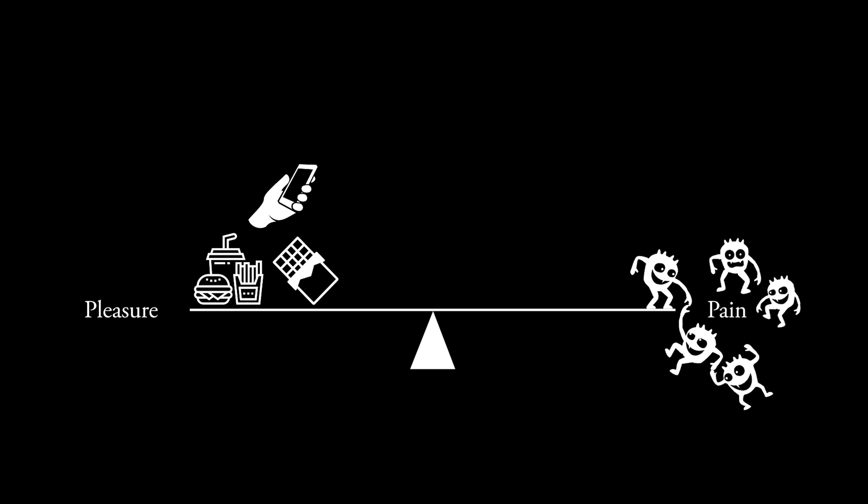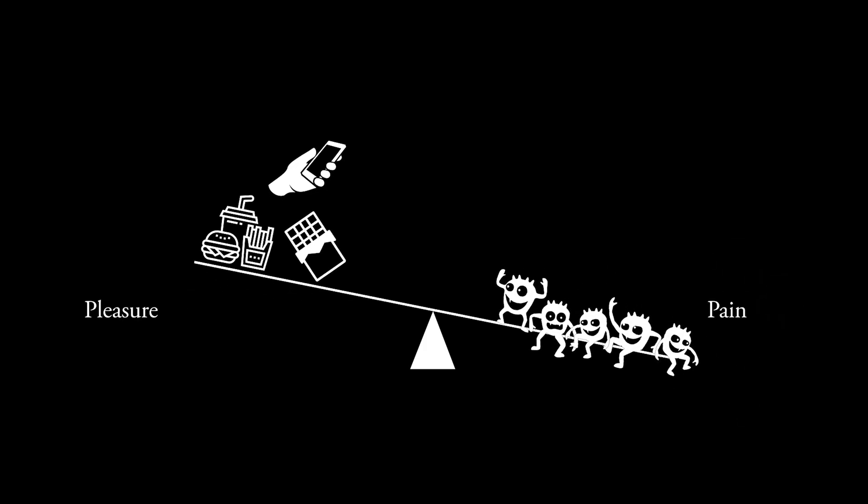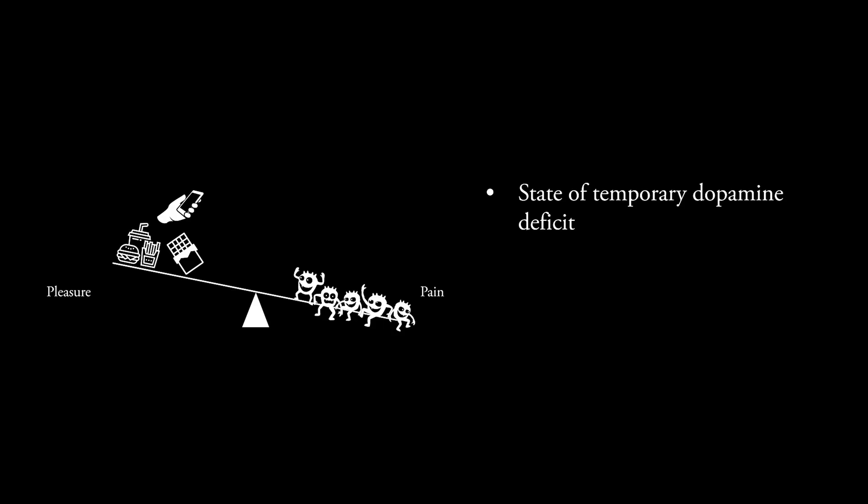But here's another catch. The brain doesn't just bring the scale back to balance. It tips it further until it reaches the equal and opposite amount first, before going back to balance. And when it tips it further, that is when you're in a temporary dopamine deficit. And that is when you feel drained and low in motivation.